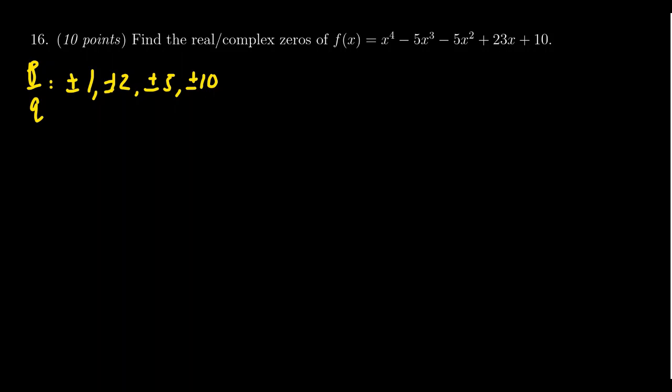We could try Descartes' rule of signs, variation of signs. We see one variation right there. We see two variations. So there's two possible positive roots. That's a possibility.